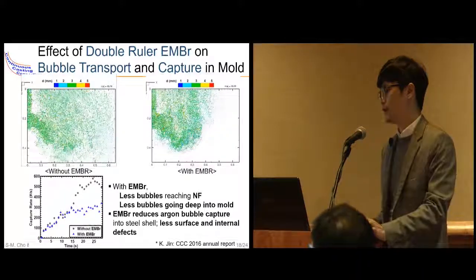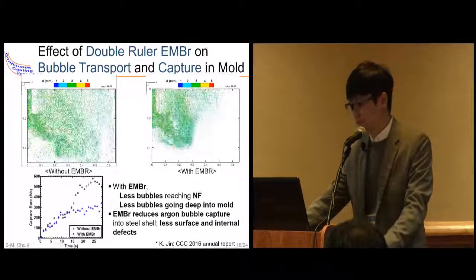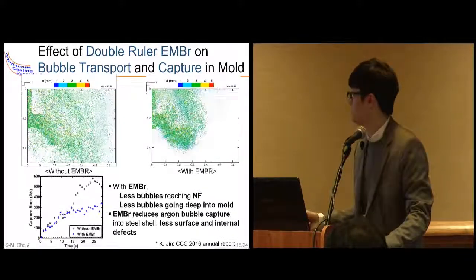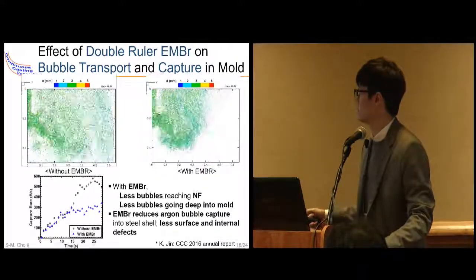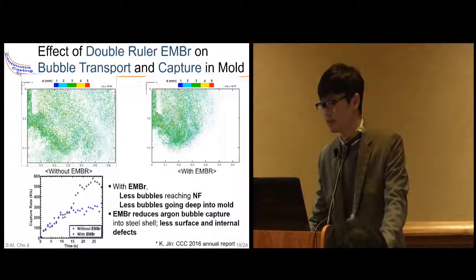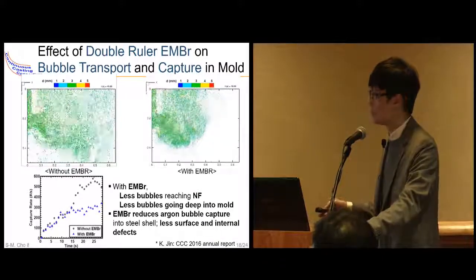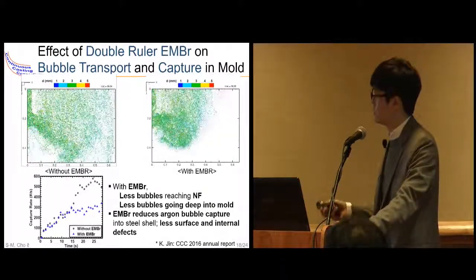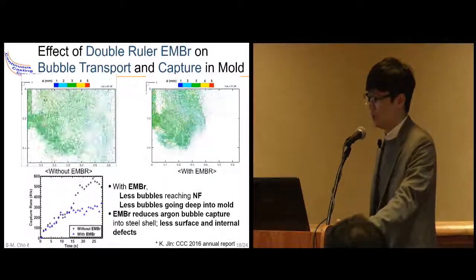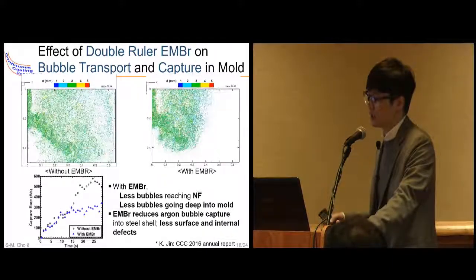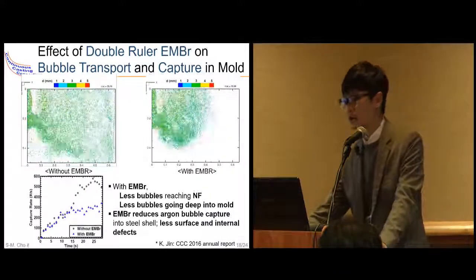We also studied the effect of EMBR on argon bubble motion. The left case shows without EMBR and the right case shows with EMBR. With EMBR, fewer bubbles reach the narrow face and fewer bubbles go into the mold, as shown in these two videos. This is a good sign indicating that EMBR reduces the possibility of argon bubble capture into the steel shell, resulting in fewer surface and internal defects.